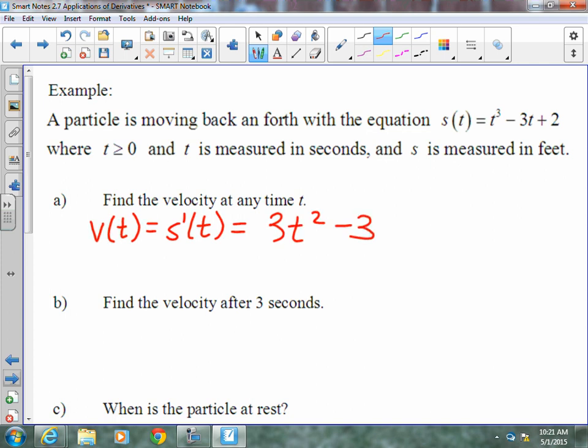Now, it says find the velocity after three seconds. Well, our velocity after three seconds would be the velocity with the 3 plugged in. So, 3 times 3² minus 3 gives us a velocity of 24. Velocity means it's moving. Our units were feet per second.